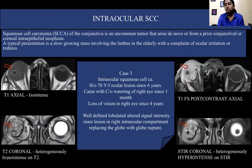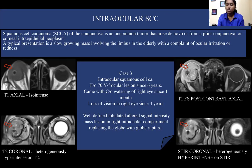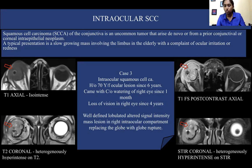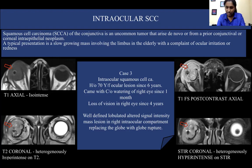My next case was a biopsy-proven case of intraocular squamous cell carcinoma. It was a 70-year-old female who presented with an ocular lesion for the past six years, with complaints of watering of the right eye for one month and loss of vision in that eye for the past four years. On imaging, a well-defined lobulated altered signal intensity mass lesion in the right intraocular compartment was seen, replacing almost the entire globe along with rupture of the globe. On T1 axial images, the mass appeared iso-intense. On T2 coronal, it was heterogeneously hyper-intense. On T1 fat-sat post-contrast, there was heterogeneous post-contrast enhancement. On STIR coronal, it was also heterogeneously hyper-intense.